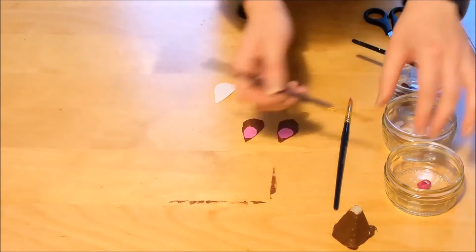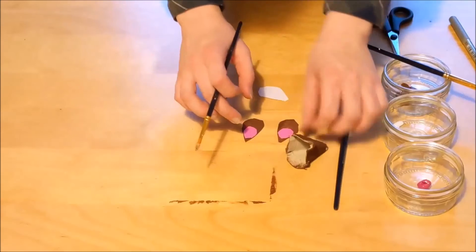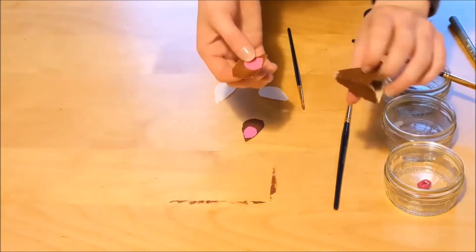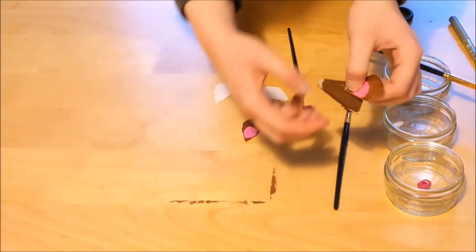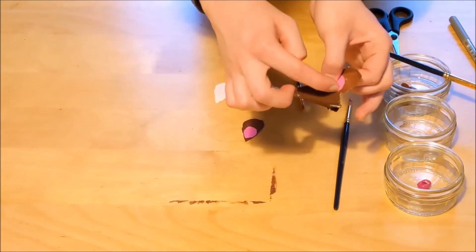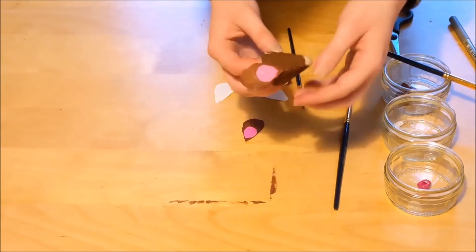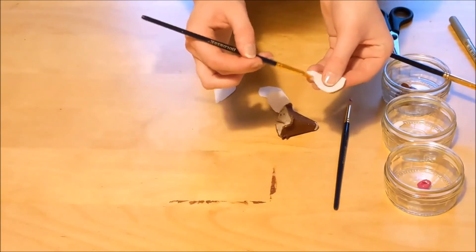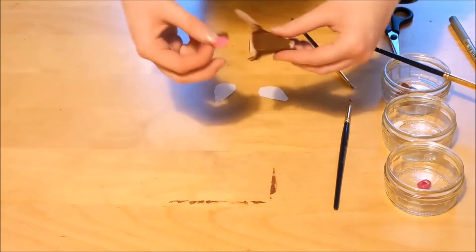Now we just need to attach them to the head. Get some PVA glue, attach it to the bottom part of the ear just at the back, and then choose whatever side you like at the top and press it down. Once that's attached, do the exact same thing on the other side and your head's almost ready.